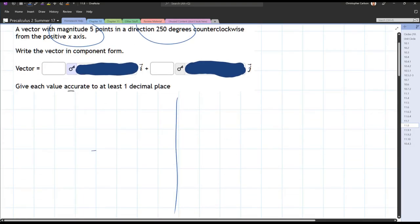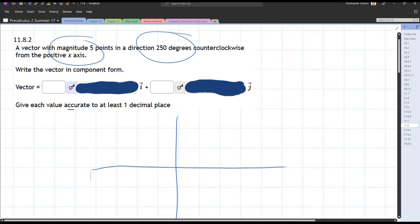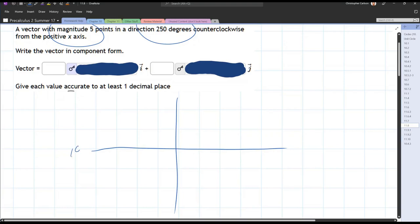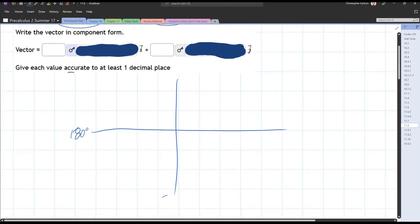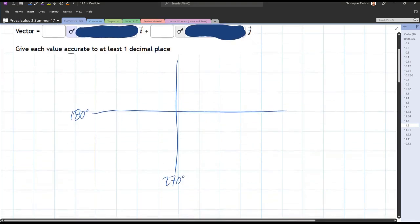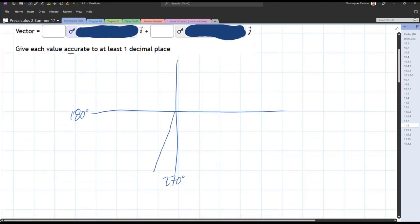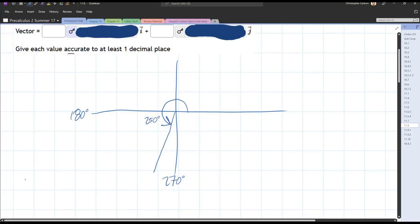Let's go ahead and graph this really quick. 250 degrees counterclockwise. Well, we're in degrees, so this is 180, 270, so 250 is close to 270, maybe something like that. Right there, 250 degrees.